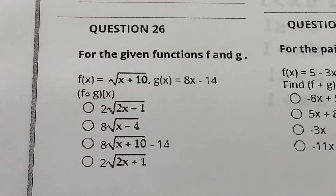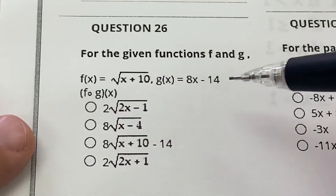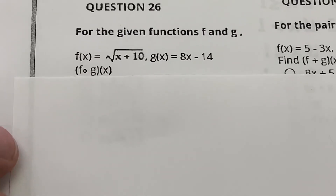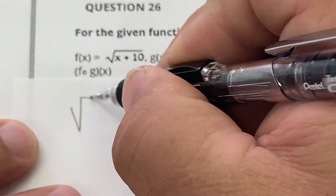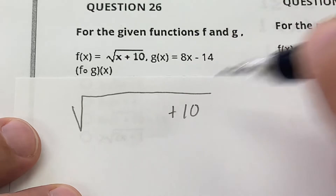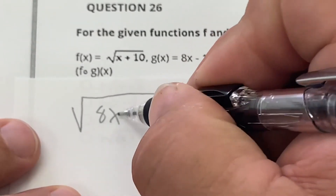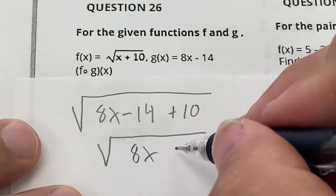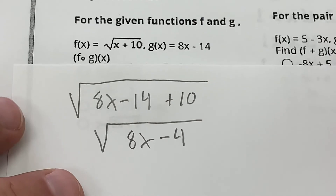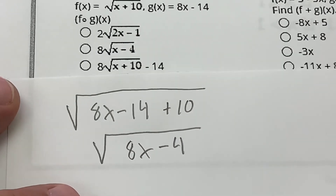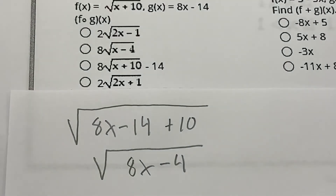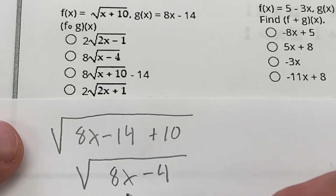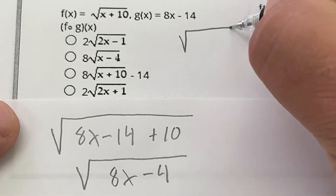Number 26: put g into f. I put g inside the square root, so it's √(something + 10) where something is 8x − 14. That gives √(8x − 14 + 10) = √(8x − 4). I can factor a 4 out: √(4(2x − 1)), which simplifies further.